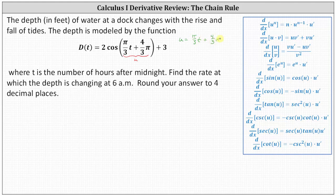To apply the chain rule we also have to find u prime, which is the derivative of the inner function — the derivative of pi divided by three times t plus four-thirds pi — which equals pi divided by three, because the derivative of t with respect to t is one and the derivative of a constant is zero.